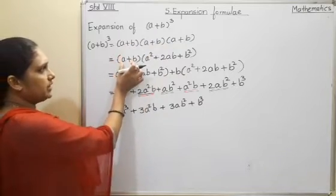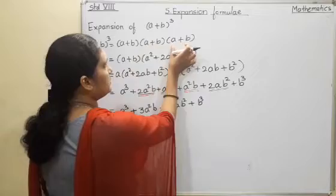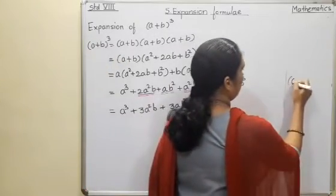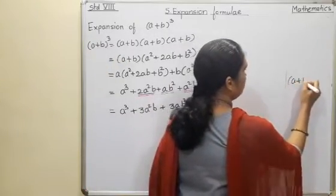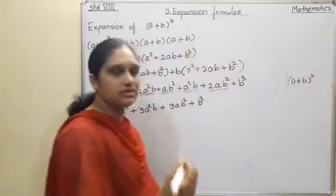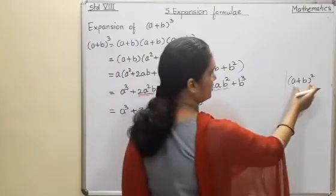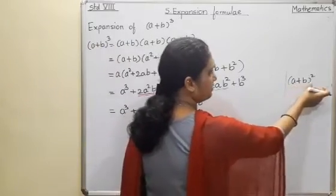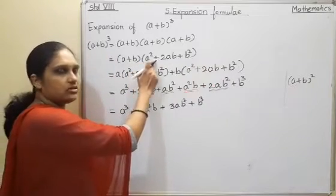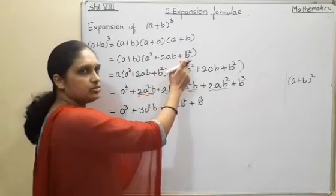Now the first bracket I will write as it is. Then a plus b, a plus b — two brackets — that means it will be (a+b) squared. And in the previous video we have already seen the expansion of this. So what is the expansion? (a+b) squared expansion is a squared plus 2ab plus b squared.